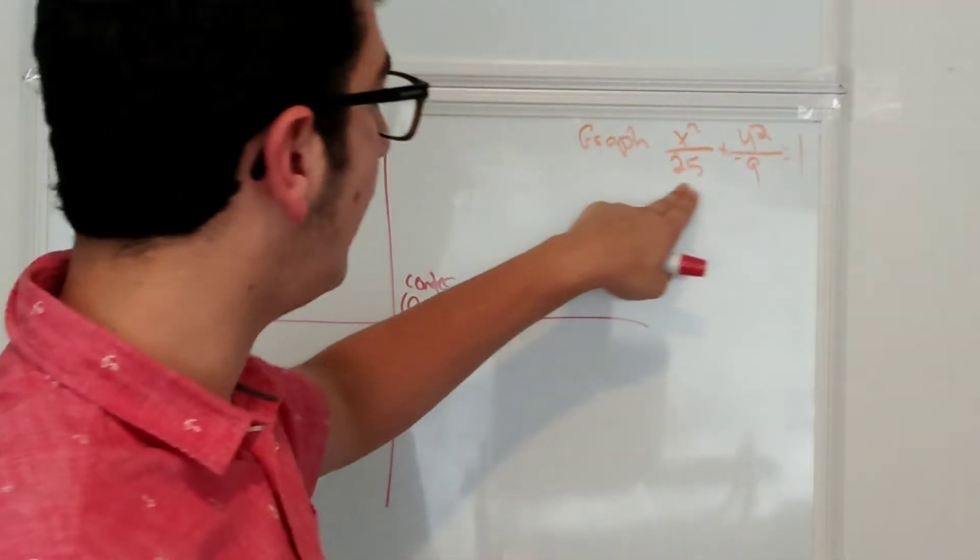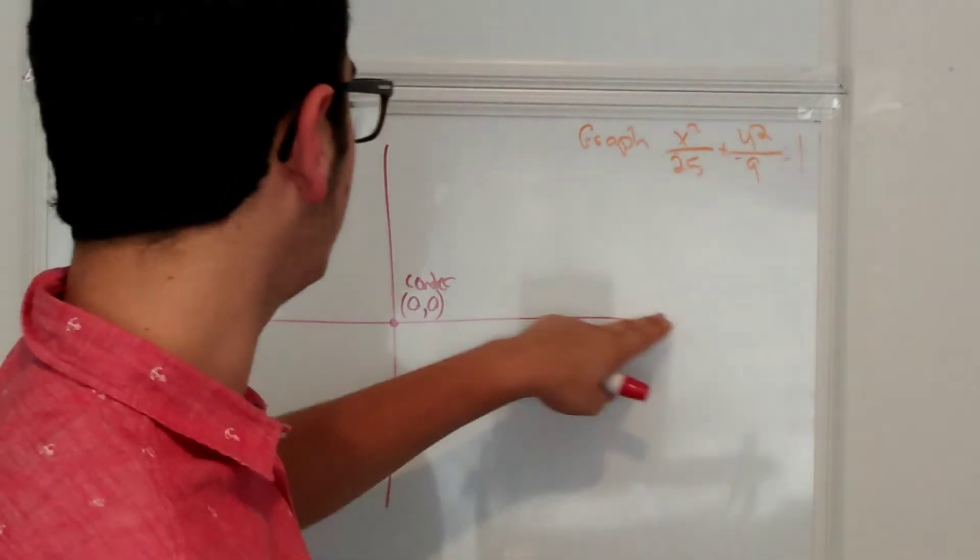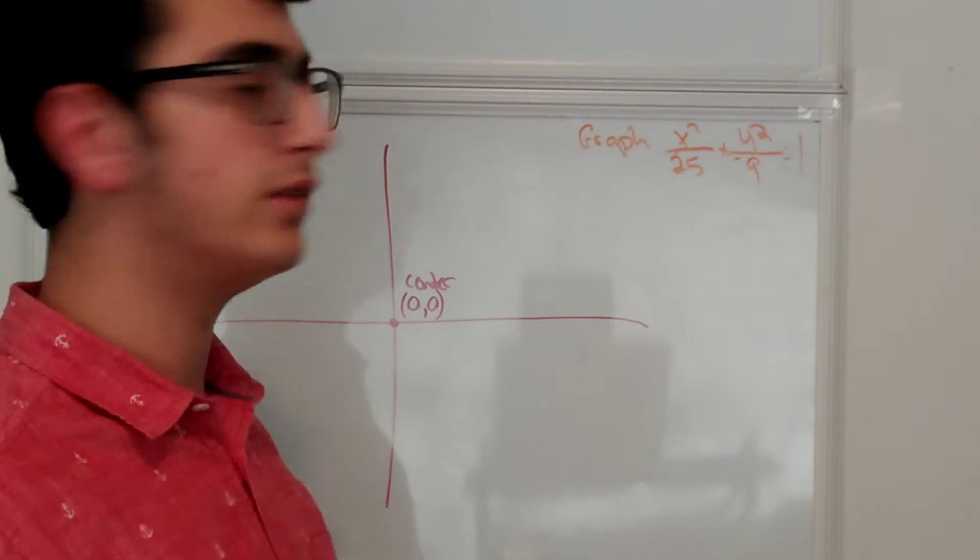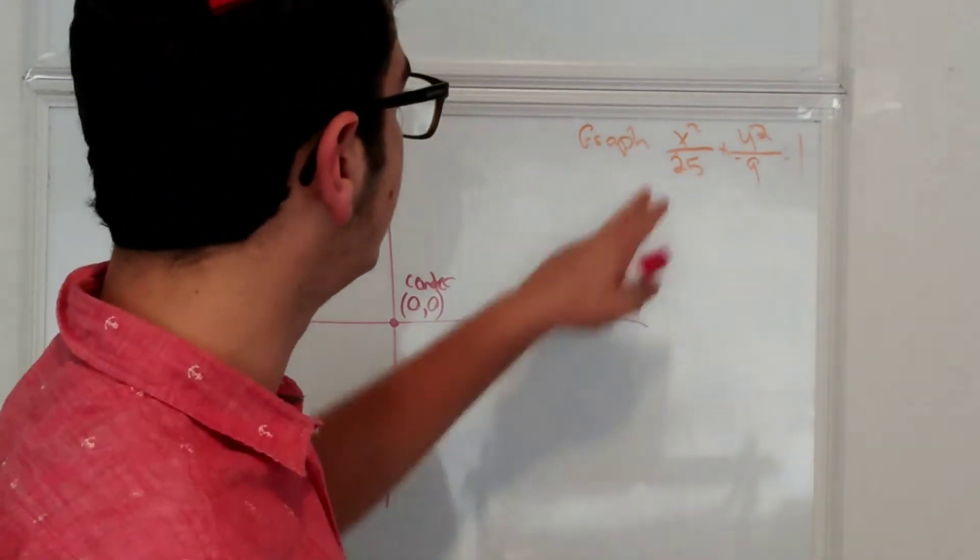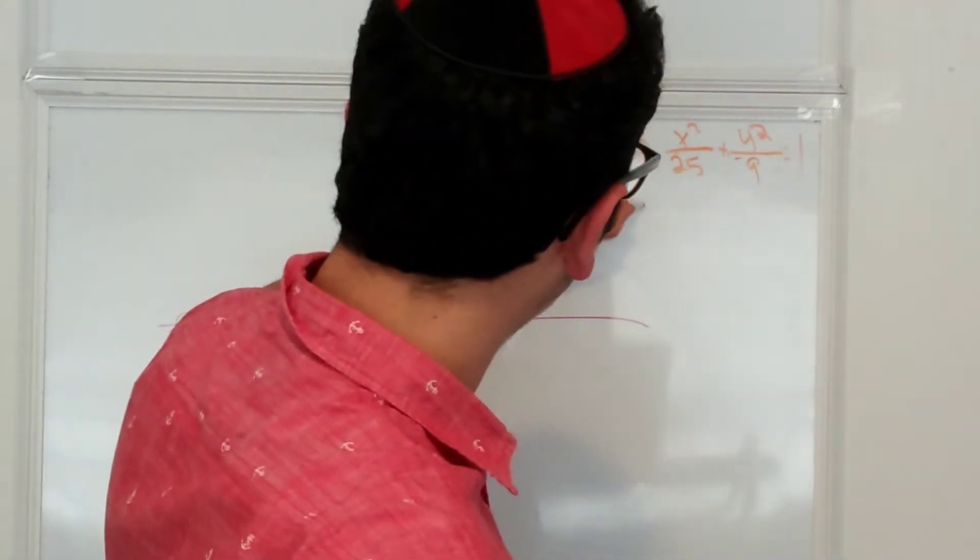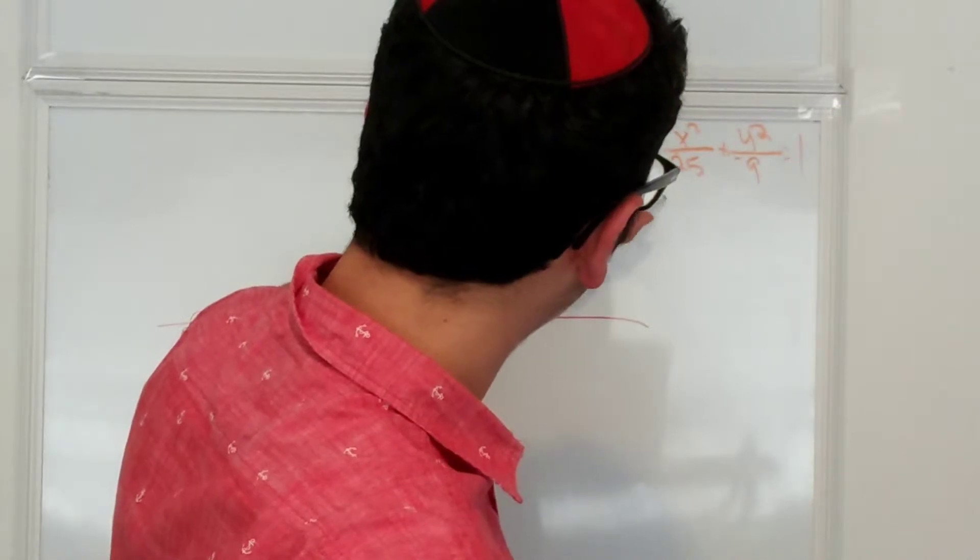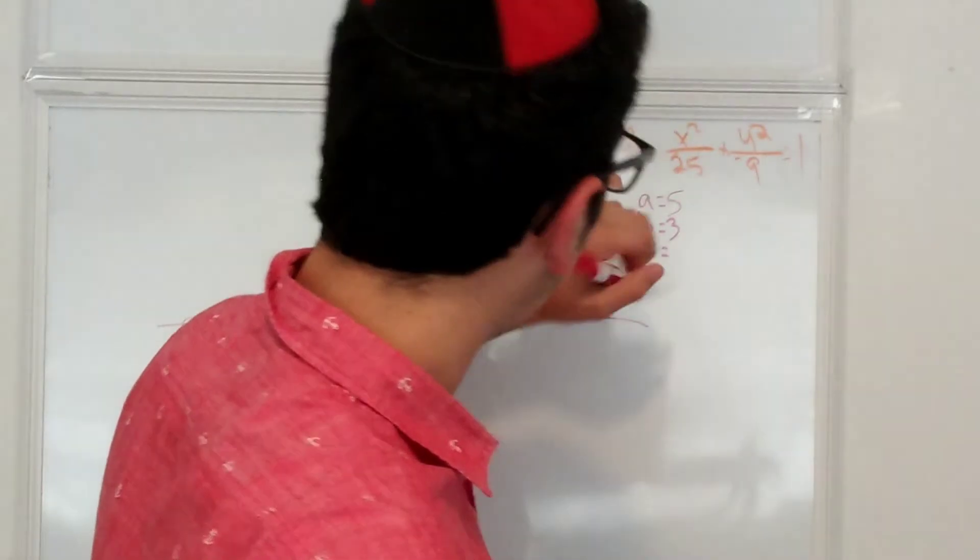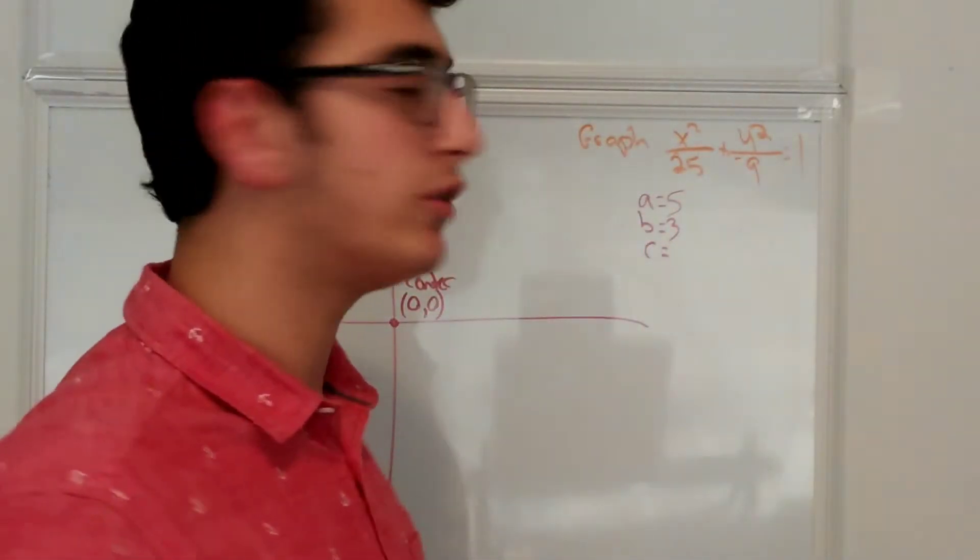So since the term on the x side is bigger, we're going to have the ellipse be horizontal. And we're going to have a be 5, b is going to be 3, and now you'll notice this is a 3, 4, 5 triangle.